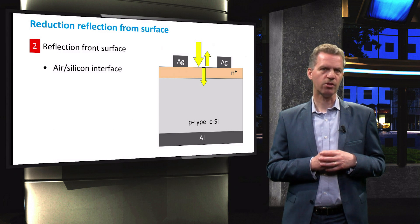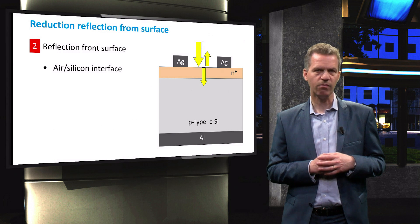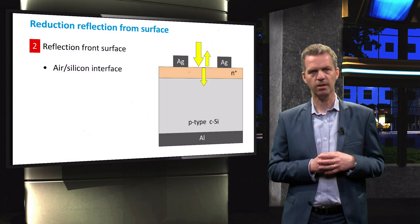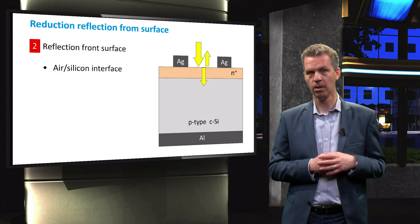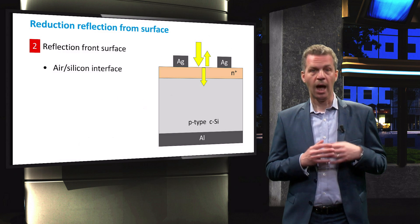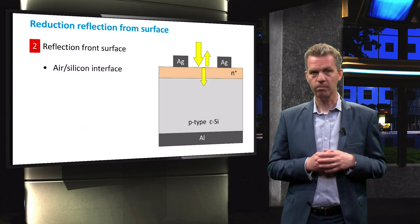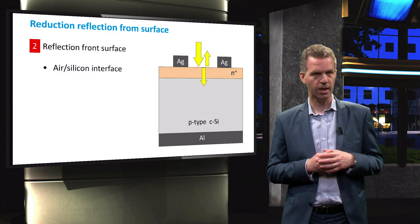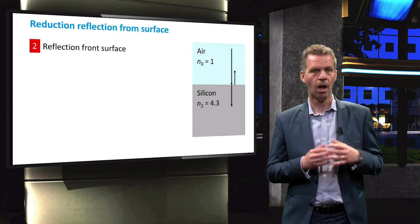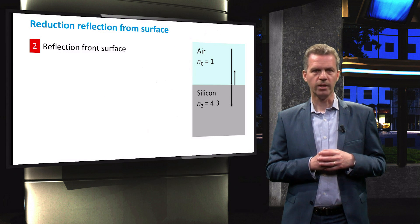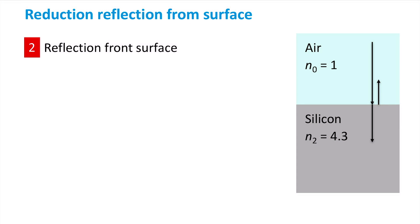Reflection of light at the front surface of the cell is caused by the difference in refractive index of the silicon and surrounding medium which is usually air. At the interface between two media a fraction of light will be reflected according to the Fresnel equations.